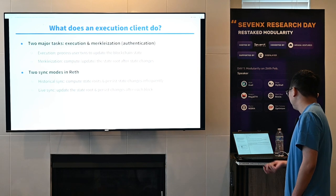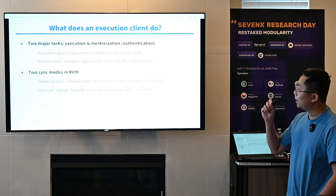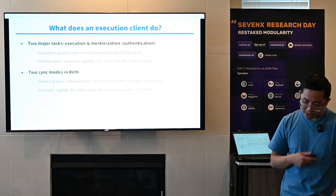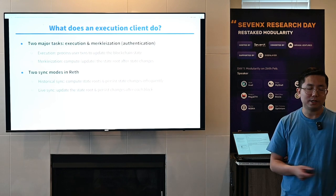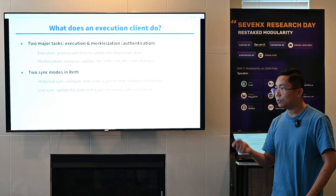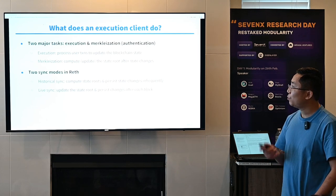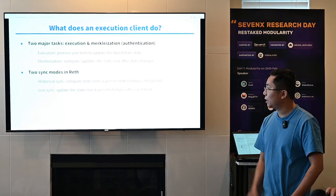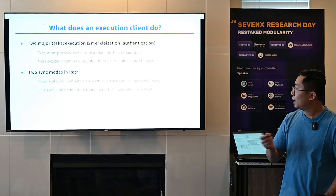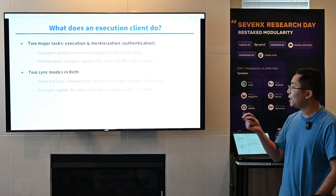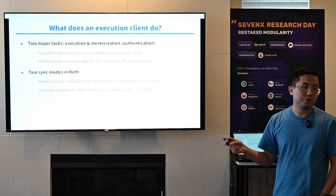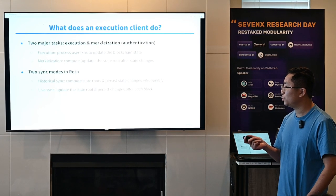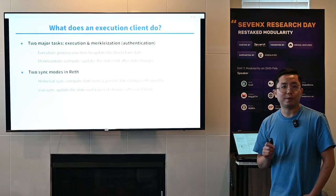Before we dive into numbers, let's review some background. An execution client basically has two major tasks: execution and merkleization. Execution is executing the transactions and updating the blockchain state. Merkleization is computing or updating the state root after state changes. In Reth, there are two sync modes that differ in how often they update the state root. Historical sync is used to sync from the genesis block — in this mode Reth only updates the state root after processing a large batch of blocks. Live sync is used to keep up with the tip of the chain, and in this mode the state root is updated after each block.